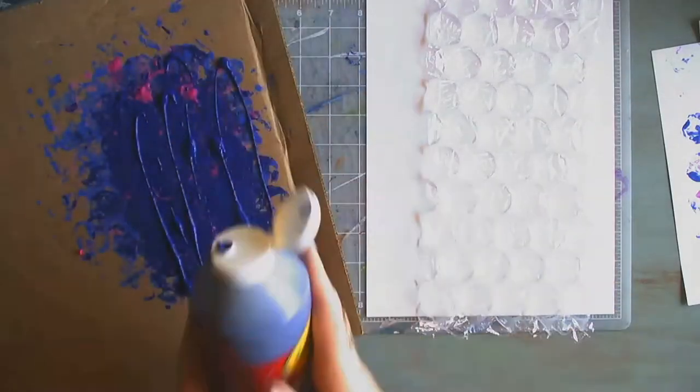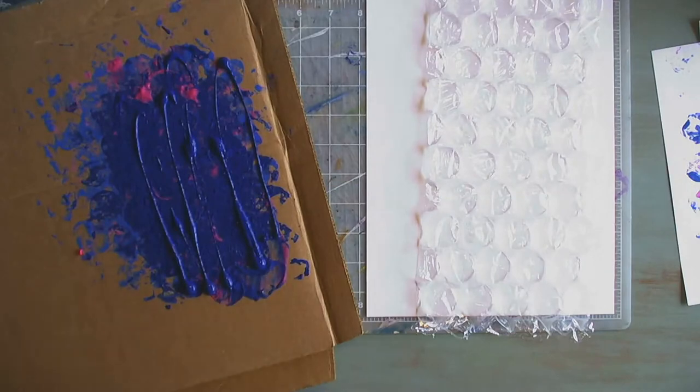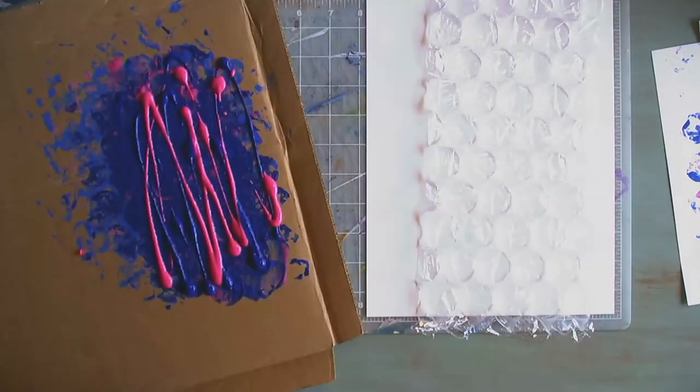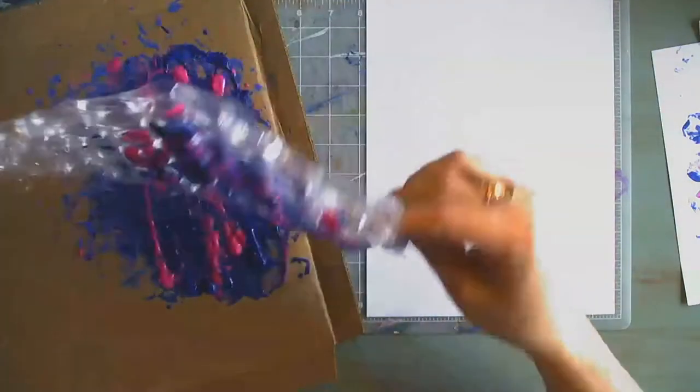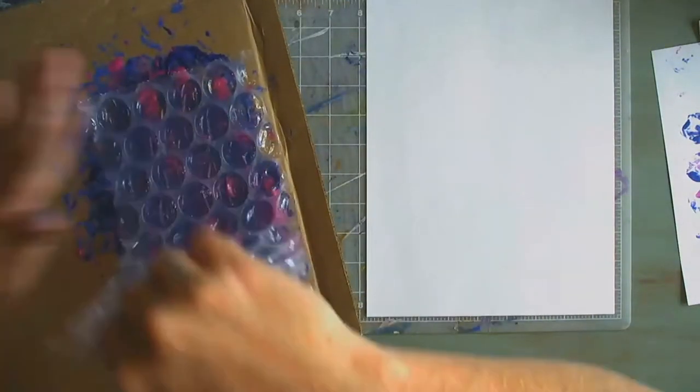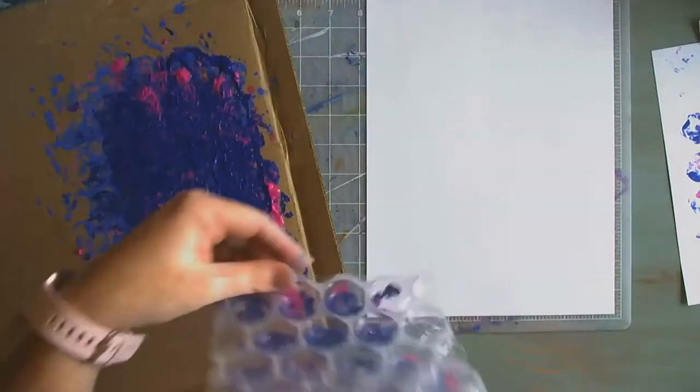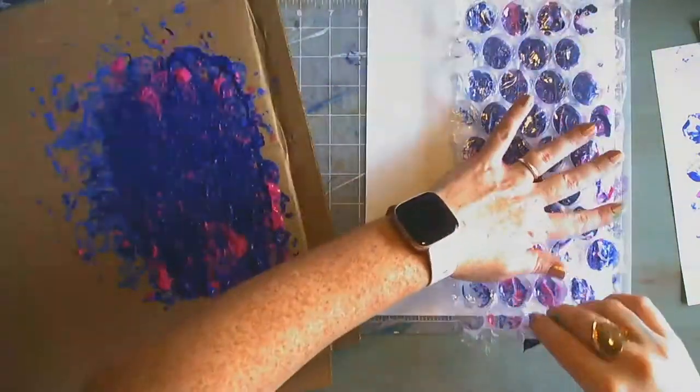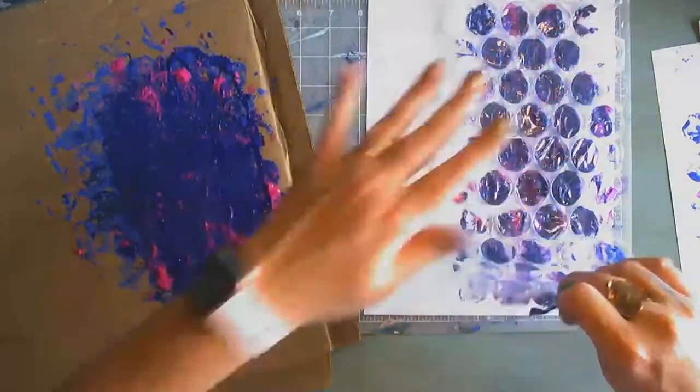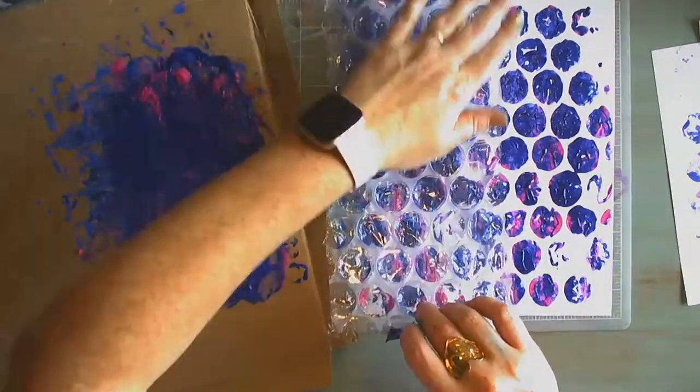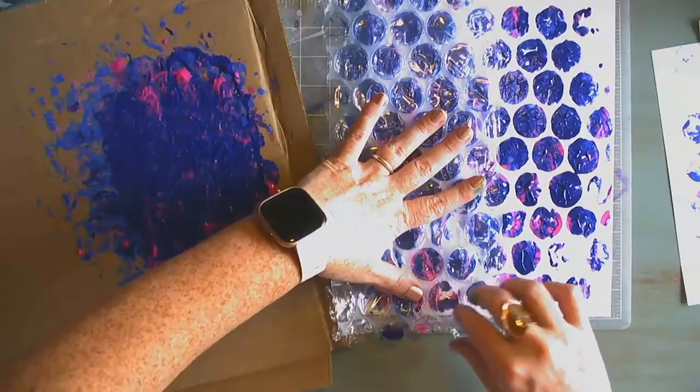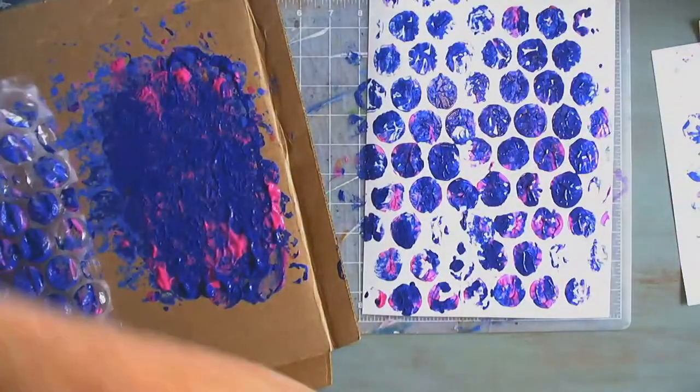The first thing we're going to do is we're going to do some printing with bubble wrap. So, find yourself some paint. I'm using a washable tempera paint, and go ahead and press your bubble wrap into the paint, and then press it on your paper to make a really cool print. You can see I line it up, and I do this on both sides of my paper. I really like blending those two colors together. It's really fun.